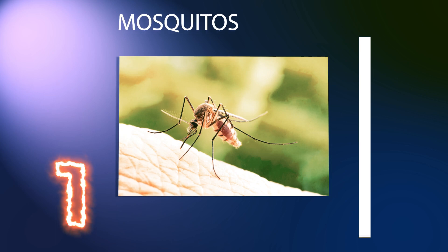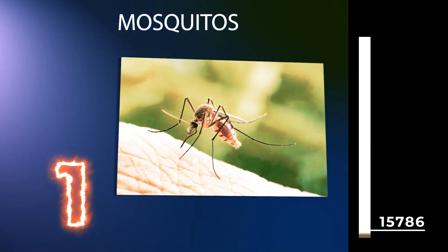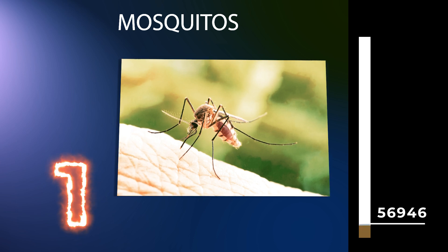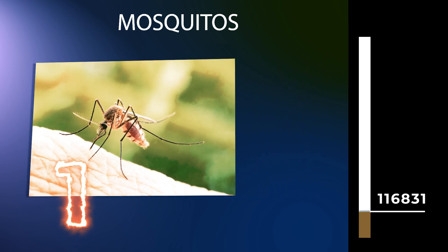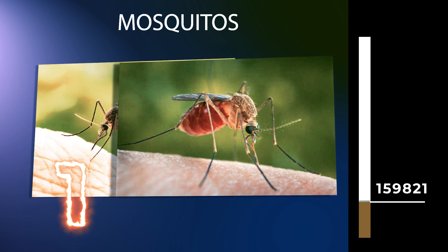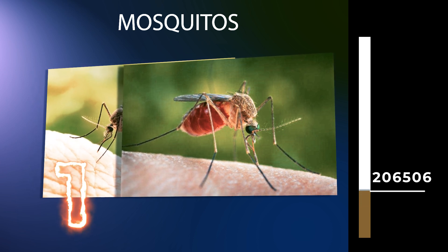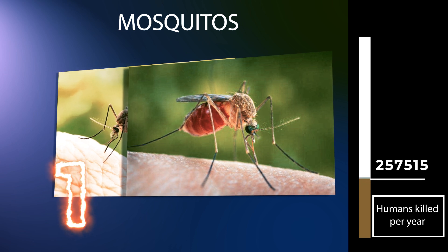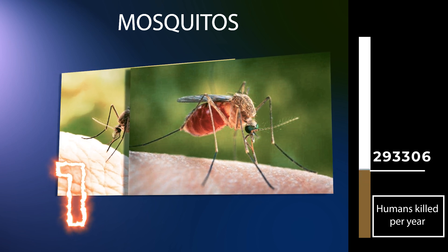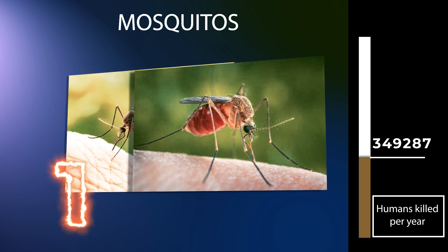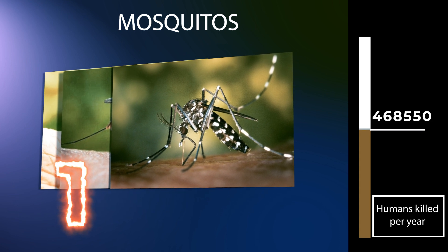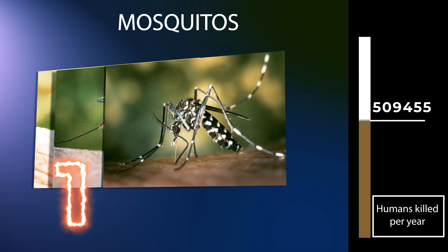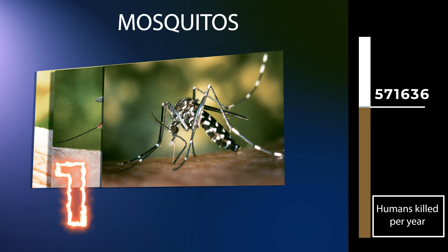Mosquitoes can act as vectors for many disease-causing viruses and parasites. Infected mosquitoes carry these organisms from person to person without exhibiting symptoms themselves. Mosquito-borne viral diseases include yellow fever, dengue fever, and chikungunya, transmitted mostly by Aedes aegypti. Dengue fever is the most common cause of fever in travelers returning from the Caribbean, Central America, South America, and South Central Asia. This disease is spread through the bites of infected mosquitoes and cannot be spread person to person. Severe dengue can be fatal, but with good treatment, fewer than 1% of patients die from dengue.